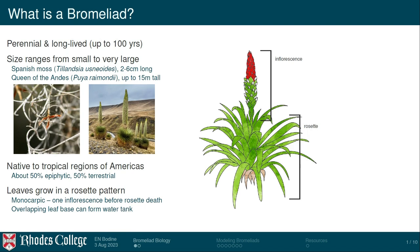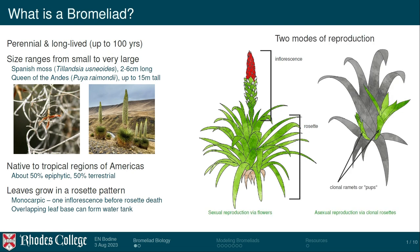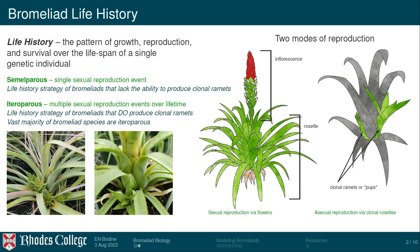Their leaves grow in a rosette pattern — a spiral rosette, sometimes overlapping at the base — and can form a tank that holds water, providing a whole micro-ecosystem for many creatures. From the center of each rosette grows an inflorescence that produces flowers, allowing sexual reproduction. But there are actually two modes of reproduction in bromeliads: the classic sexual reproduction via pollination, and clonal rosettes — sometimes called clonal ramets or pups — which are genetically identical to the parent plant and can themselves produce inflorescences.